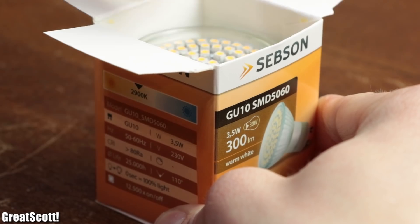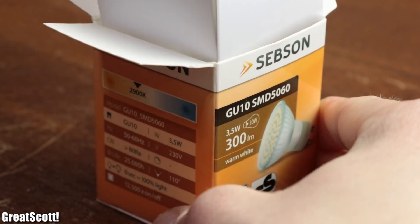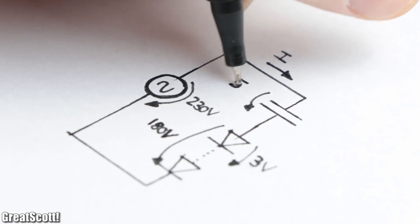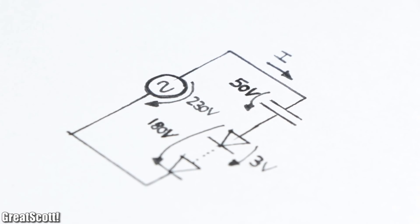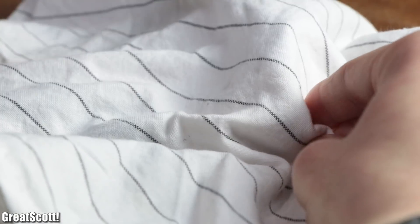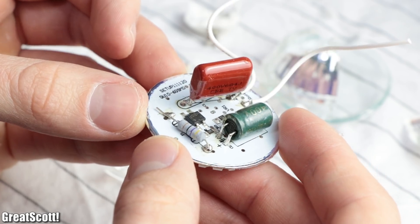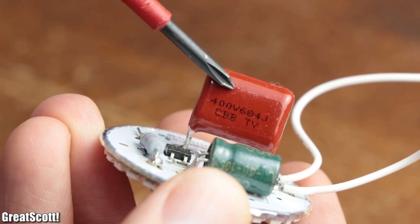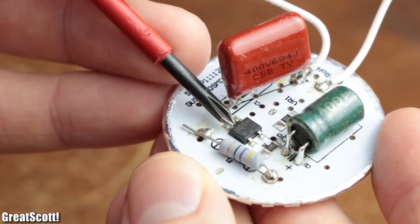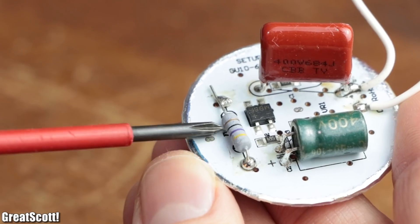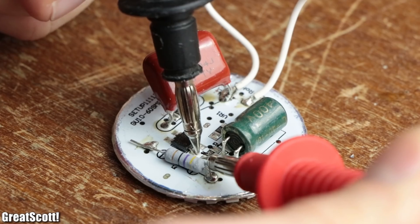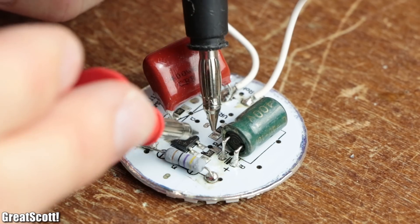The first one I found was this GU10 LED spot that apparently uses up to 60 LEDs in series in order to decrease the voltage the capacitor has to drop. After destroying the glass enclosure of the lamp, I had a closer look at the main PCB. As expected we got a big capacitor, but also a full bridge rectifier, power resistor, smaller resistors, and a big electrolytic capacitor. But all in all, this was not quite the circuit I was looking for.